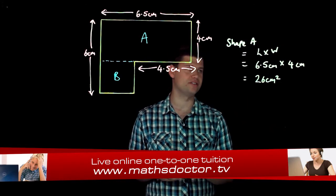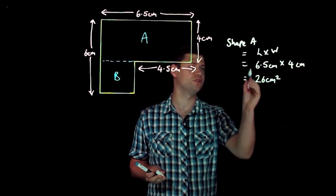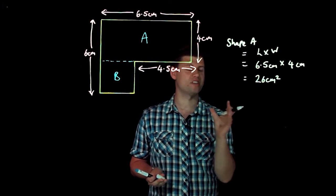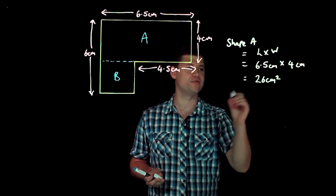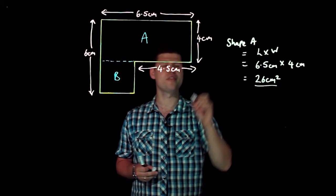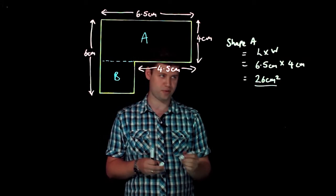Now if I wanted to do that mentally and I wasn't too sure about how I'd do it, I'd do 6 times 4 is 24, 0.5 so that's a half times 4 is 2, 24 plus 2 gives me 26 centimeters squared. So that's shape A that we've dealt with.